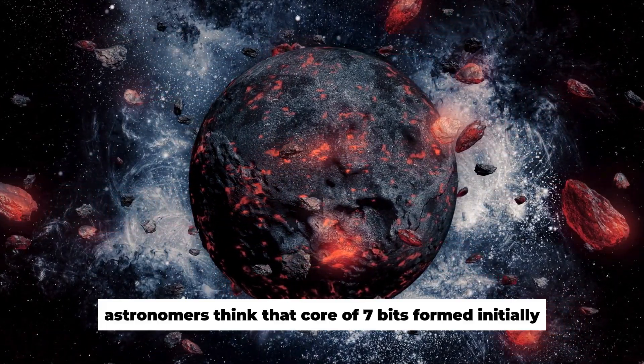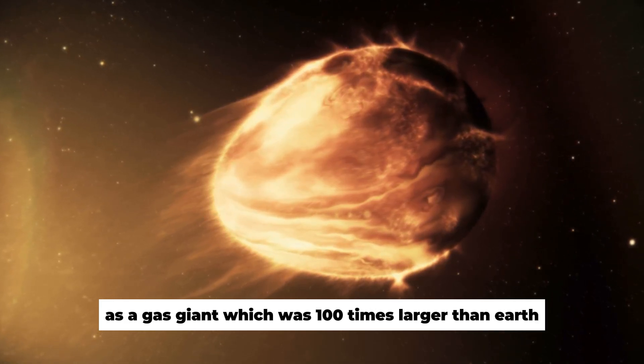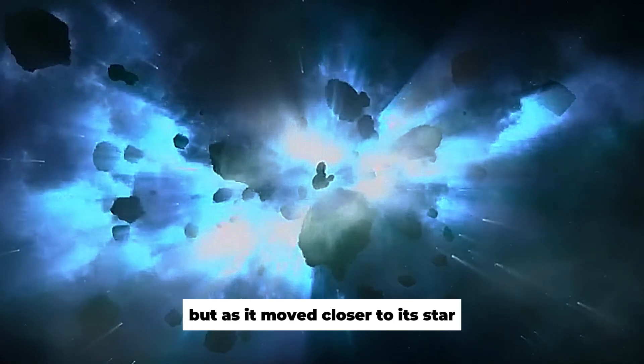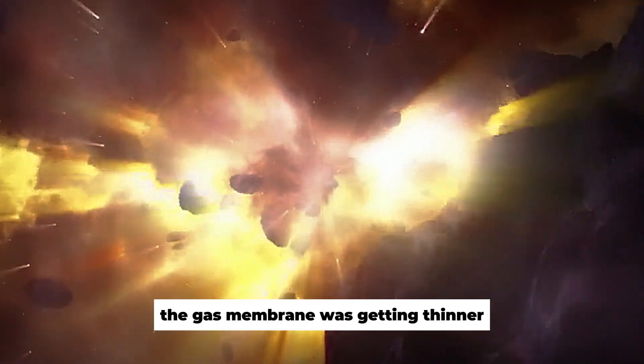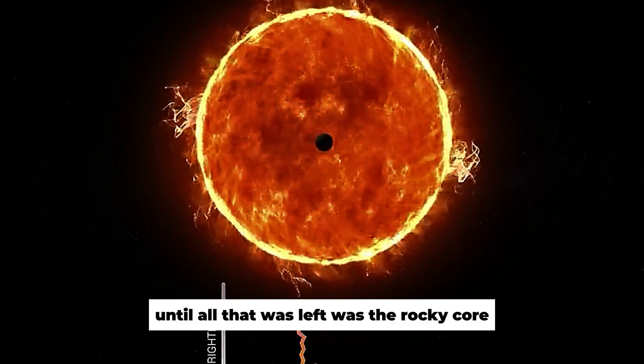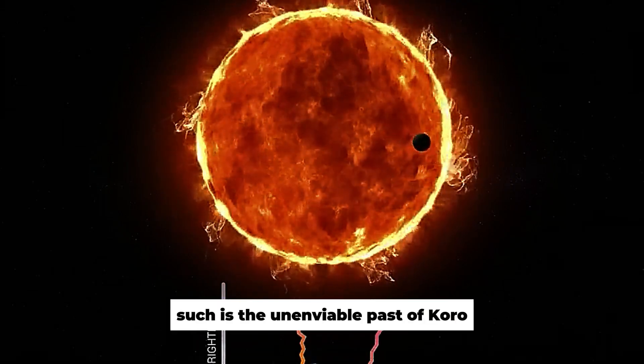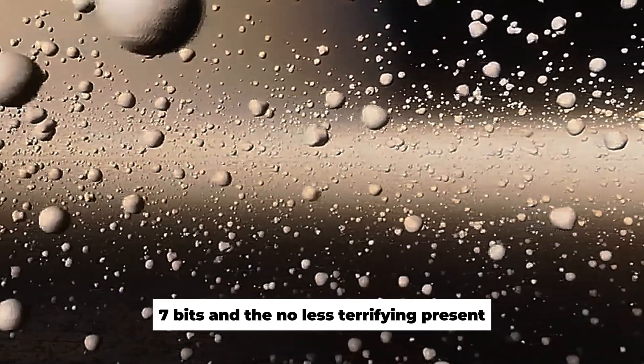Astronomers think that Koro 7-B formed initially as a gas giant, which was 100 times larger than Earth, but as it moved closer to its star, the gas membrane was getting thinner under the influence of the solar wind, until all that was left was the rocky core. Such is the unenviable past of Koro 7-B and the no less terrifying present.